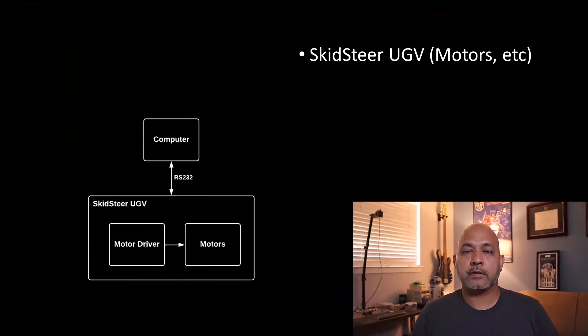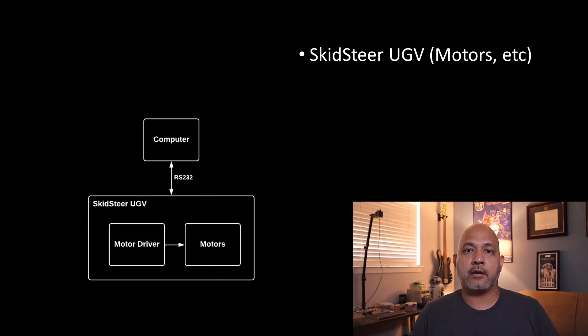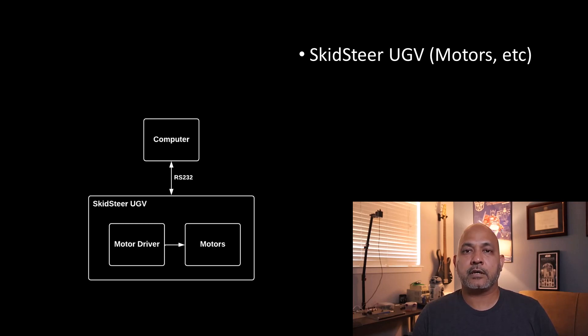So let's start with our example robot. Let's say that we have a ground vehicle that has motors that are controlled using a serial RS-232 communication channel, and I have a camera that's connected via USB.